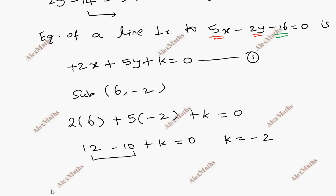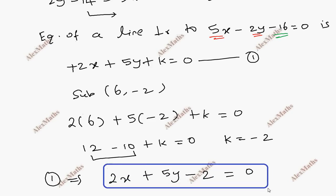So this k value, first equation substitute. So 2x + 5y - 2 = 0. This is the equation of the line PQ.